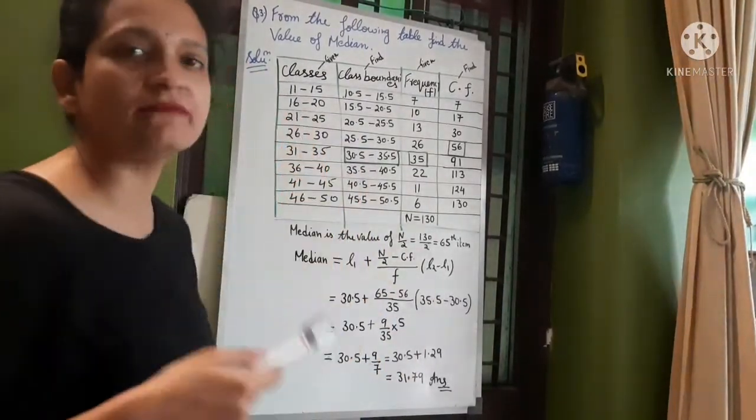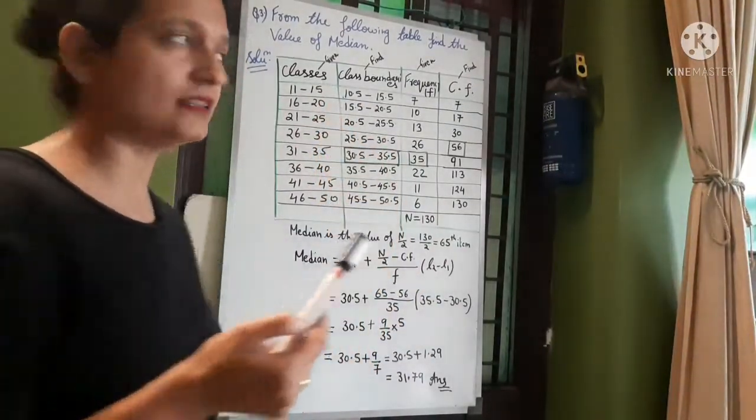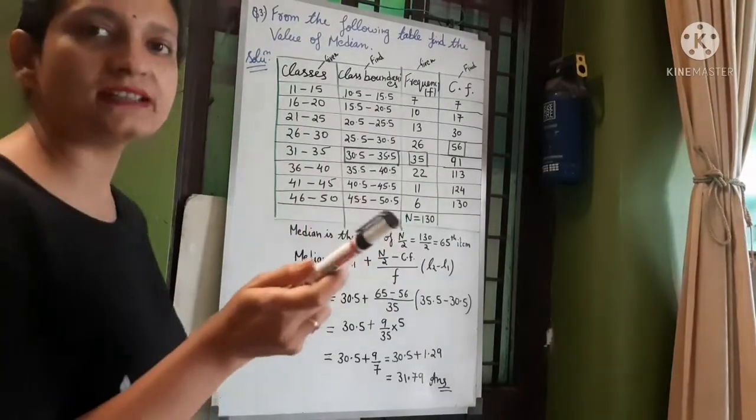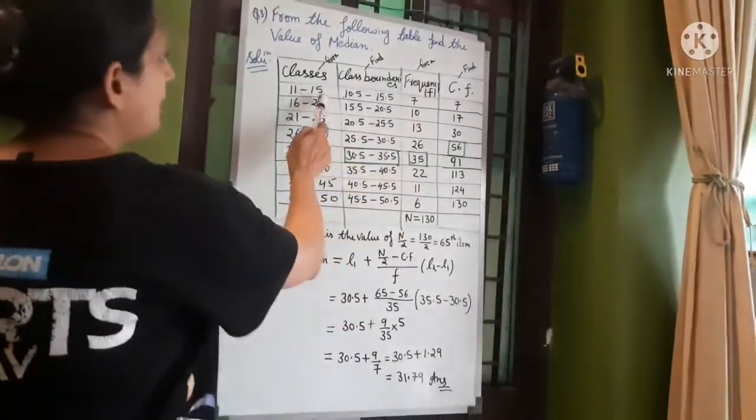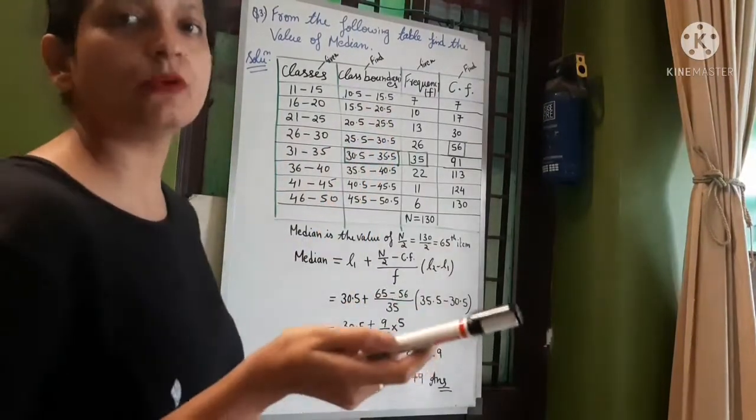Lower class we have 0.5 minus and upper class we have 0.5 add. Lower class we have 11, we have 0.5 minus, then you have 10.5. Upper class 15, we have 0.5 add to get 15.5.